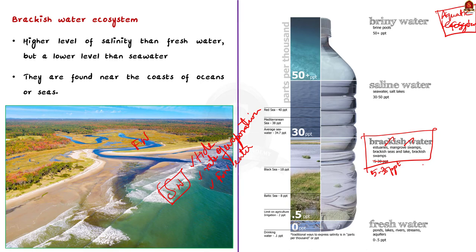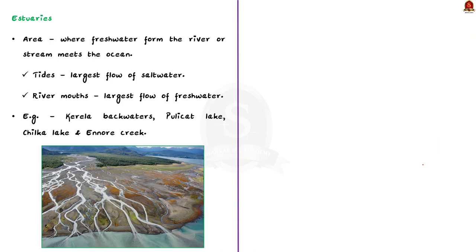An estuary is an area where a freshwater river or stream meets the ocean. In estuaries, salty ocean water mixes with freshwater, resulting in brackish water. Tides create the largest flow of salt water in estuaries, while river mouths create the largest flow of freshwater. In India, estuaries occur along coastal states where rivers meet the sea. Kerala backwaters, Pulikat Lake, Chilika Lake, and Ennur Creek are some examples of estuaries.